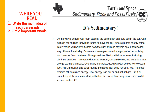Paragraph one: On the way to school, your mom stops at the gas station and puts gas in the car. Gas burns in car engines, providing force to move the car. Where did that energy come from? Would you believe it came from the Sun? Millions of years ago, Earth looked very different than today. Oceans and swamps covered a large part of present-day land masses. Vast numbers of living creatures filled prehistoric oceans, including plankton. These plankton used sunlight, carbon dioxide, and water to make energy-storing chemicals.